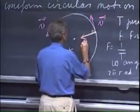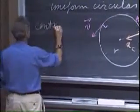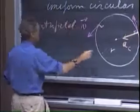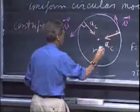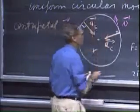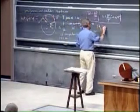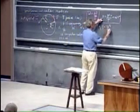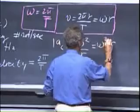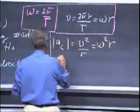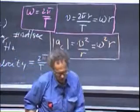We call it centripetal acceleration. Centripetal acceleration equals v squared divided by r, which is this v, and therefore it's also omega squared r. And so now we have three equations, and those are the only three you really would like to remember.